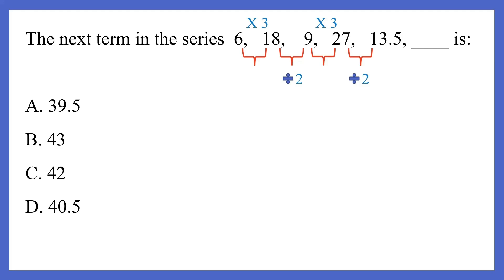So now the next two digits, 18 divided by 2 is equal to 9. 9 and 27, we know that 9, 3s are 27. 9 into 3 gives you 27. Then 27 and 13.5, 27 divided by 2 is 13.5. So as you can see, they're following an alternating pattern over here. They're multiplying into 3 and dividing by 2.